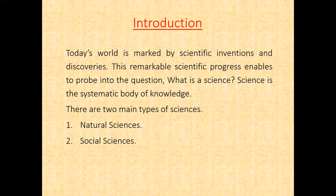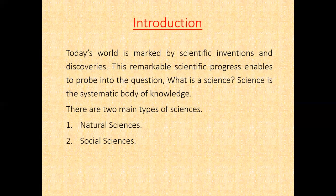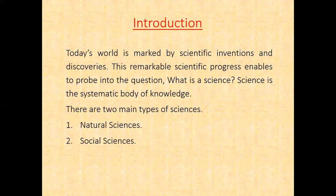Social science is called abstract or behavioral science because it is related to the study of some aspect of human behavior. For example, psychology is related to the mental aspect of human behavior; sociology is related to the study of the social aspect of man as a member of society. Human behavior can neither be empirically tested nor studied in the laboratory. Hence, the laws of social sciences are not universal, but are only statements of general human tendencies.